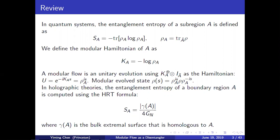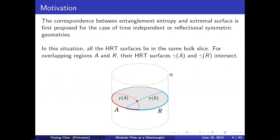I will call the state that is modular-evolved by this modular Hamiltonian the modular evolved state, which is simply ρ_s here. In holographic theories, the entanglement entropy of a boundary region A is computed using the so-called HRT formula, which states that the entanglement entropy equals the area of the bulk extremal surface homologous to A, divided by 4G Newton.